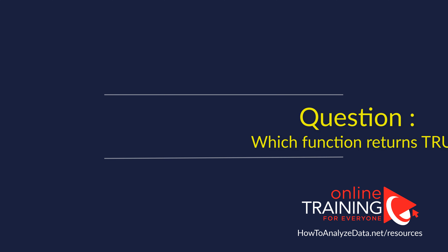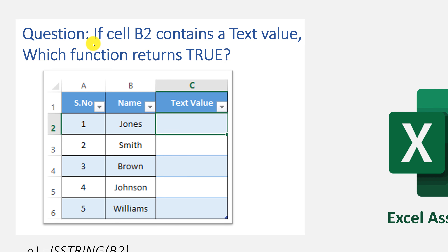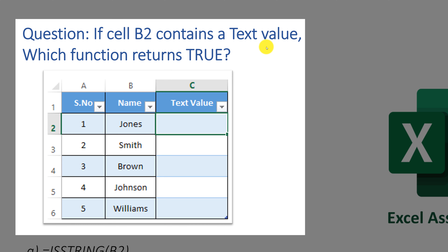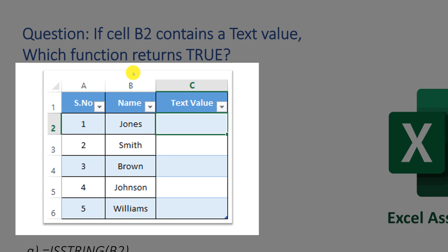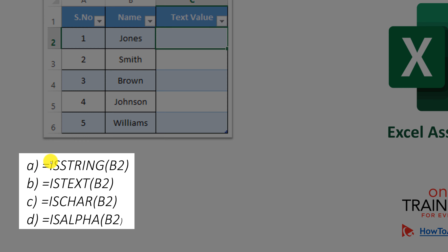Here is another question from an Excel assessment test: if cell B2 contains a text value, which function returns TRUE? A screenshot shows names in column B — John, Smith, Brown, Johnson, Williams — and four choices are presented: IsString, IsText, IsChar, IsAlpha, all pointing to cell B2. Which one would you choose?